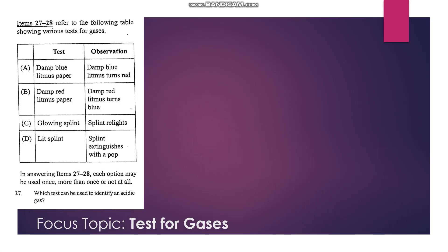Numbers 27 and 28 refer to the table here, which has tests in the second column and observations in the last column. Which test can be used to identify acidic gas? Acidic gas will turn damp blue litmus paper to red, and so A is our answer for 27.